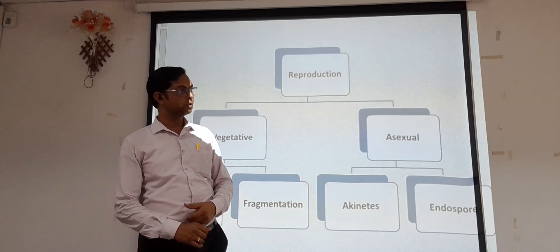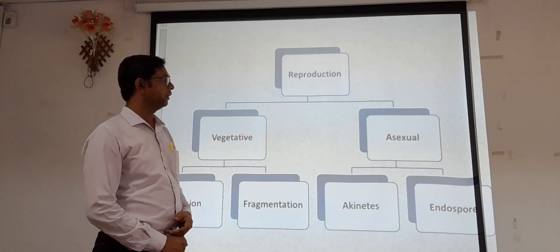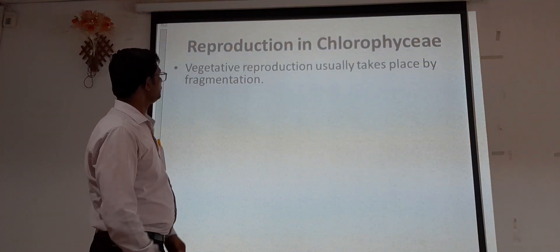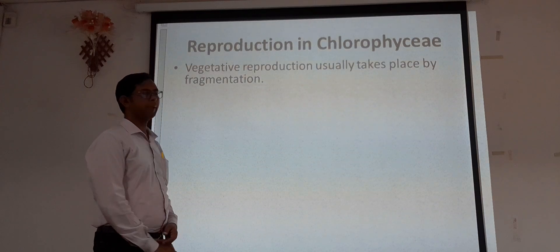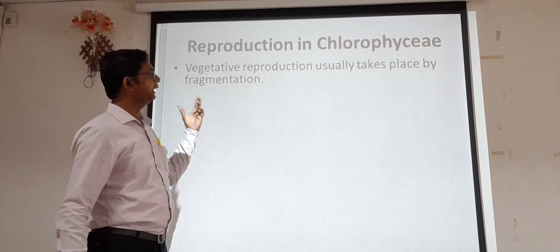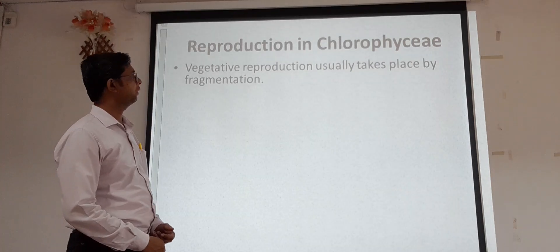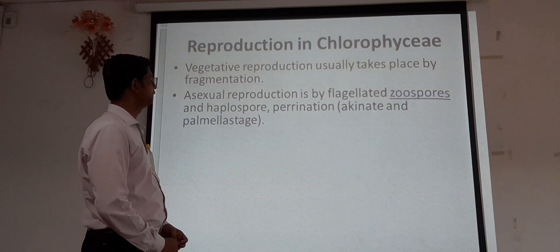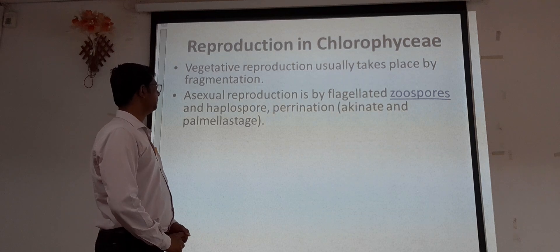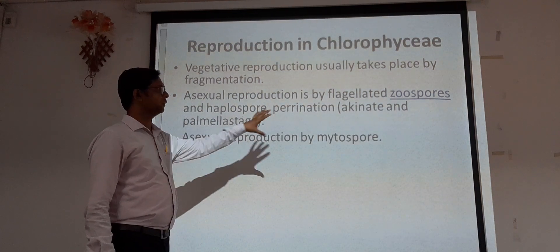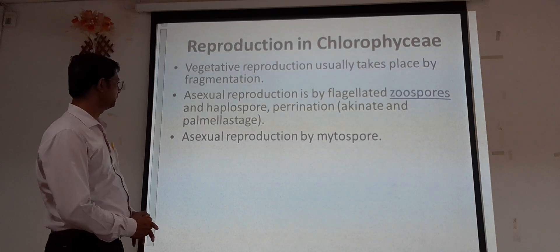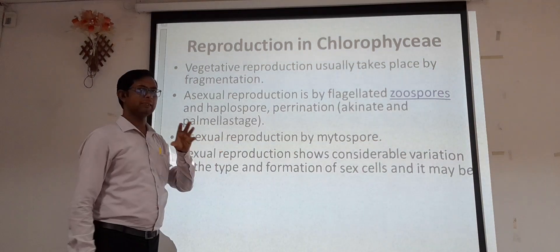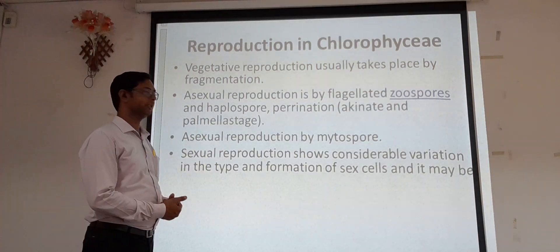Sexual reproduction is also observed in the majority of Chlorophyceae members. Vegetative reproduction usually takes place by fragmentation, while asexual reproduction is by zoospores, hypnospores, akinetes, and palmella stage. Akinetes are the most common method. Asexual reproduction is also by mitospores, producing structures with thick walls.